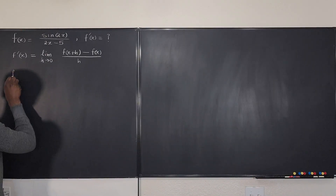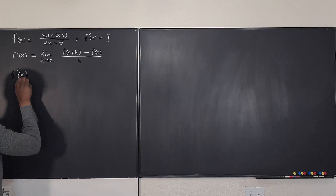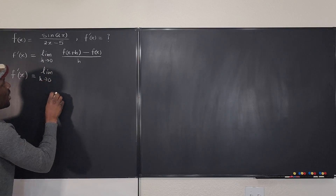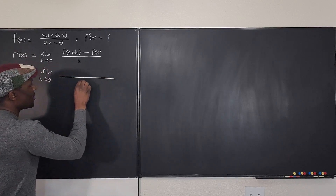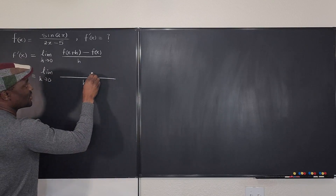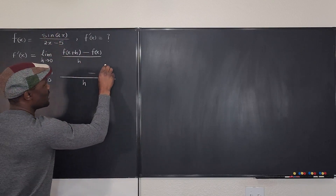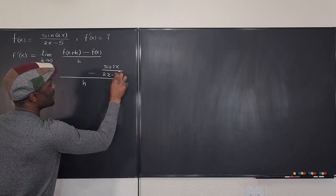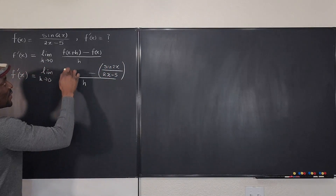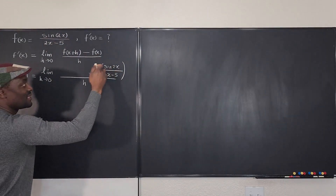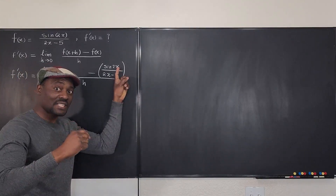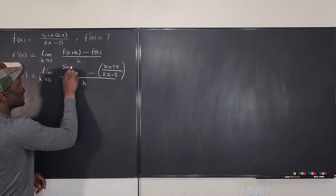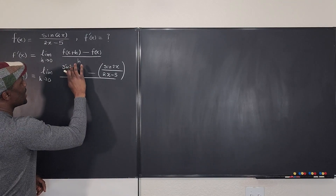So you want to say that f prime of x is equal to the limit as h goes to zero. Now watch what I'm going to do here — I'm going to write my h on the right hand side, then write minus and copy exactly what's here, which is sine 2x over 2x minus 5. And on the left, I'm going to repeat the same thing, but everywhere there's an x, I'm going to write x plus h.